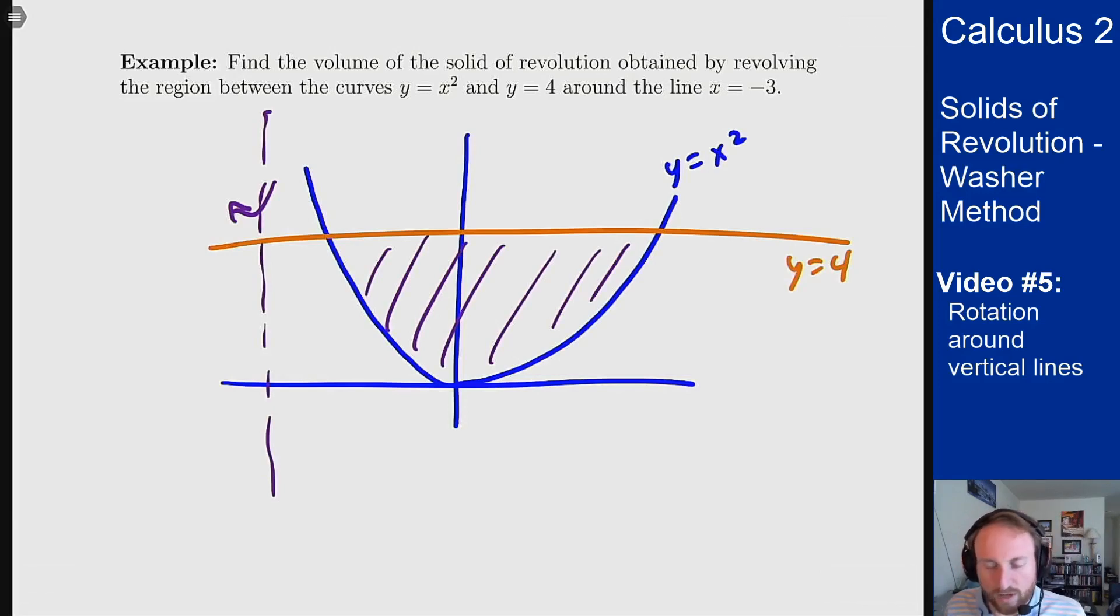So if I want to do the washer method here, and we'll see a separate way to do this in the next section which is the shell method, I need to look at a horizontal segment that I'm trying to rotate.